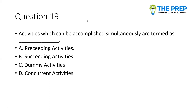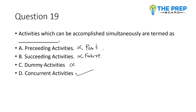Activities which can be accomplished simultaneously are termed as what? Options are: preceding activity, succeeding activity, dummy activity, or concurrent activity. Preceding activity refers to past events. For activities accomplished simultaneously, you can note the correct answer — that is 'concurrent activity.'